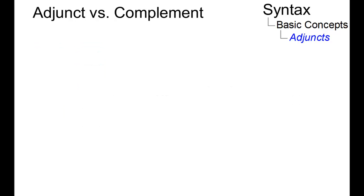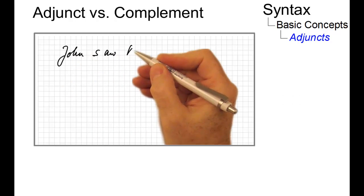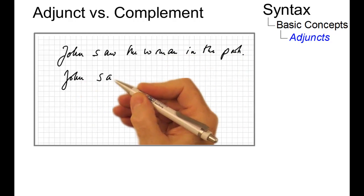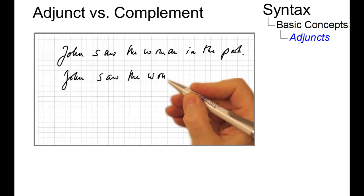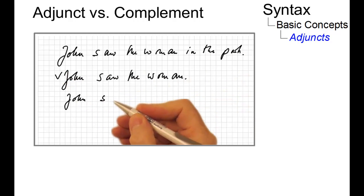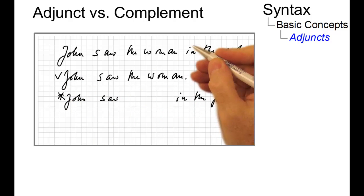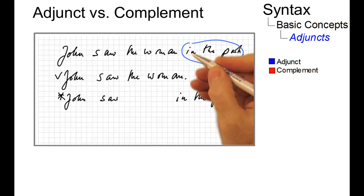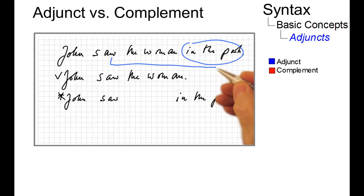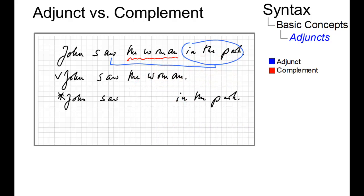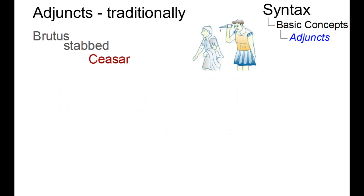Here is an example: 'John saw the woman in the park.' Where 'John saw the woman' — that is, the sentence without the adverbial — is grammatical, but 'John saw in the park' is not. So in these examples, the adverbial, realized by a prepositional phrase, is an adjunct to 'see', whereas the noun phrase 'the woman' is a complement. Note that there is no theoretical limit to the number of adjuncts.